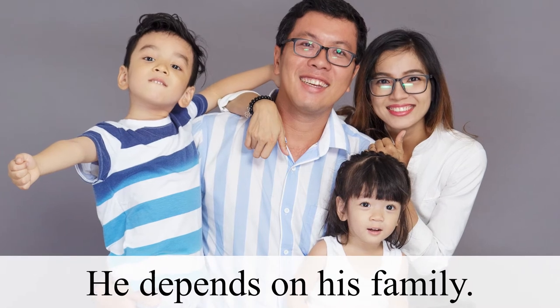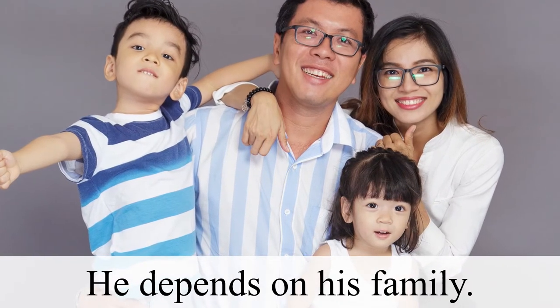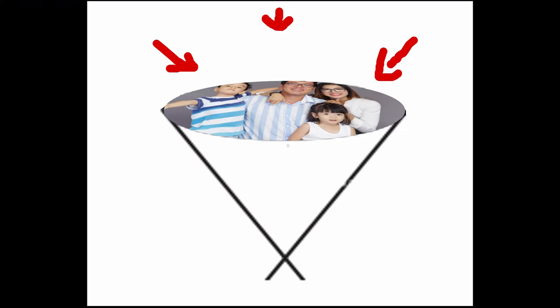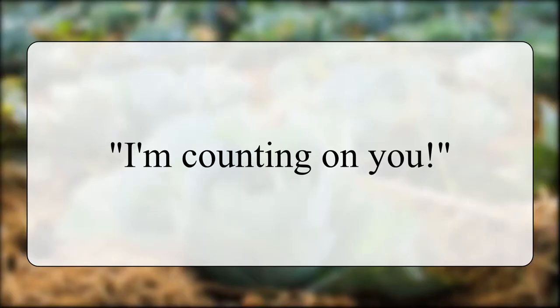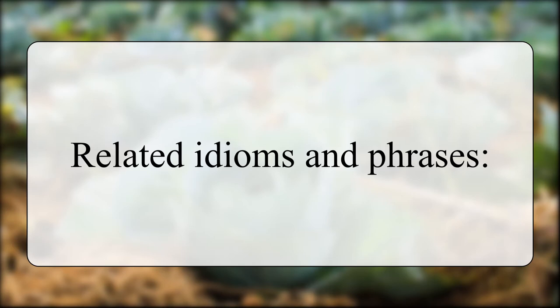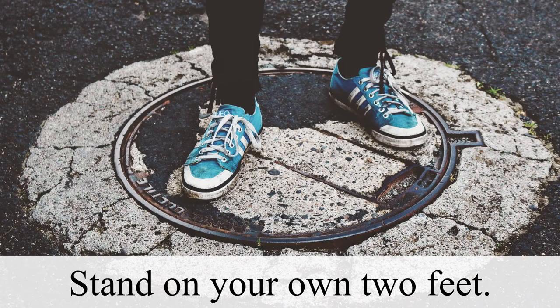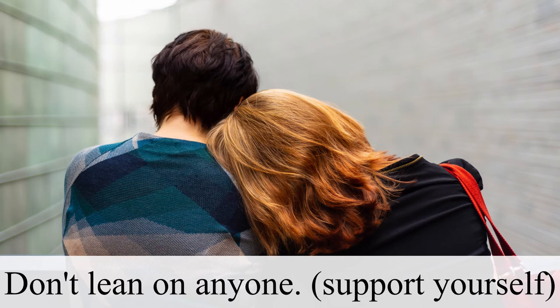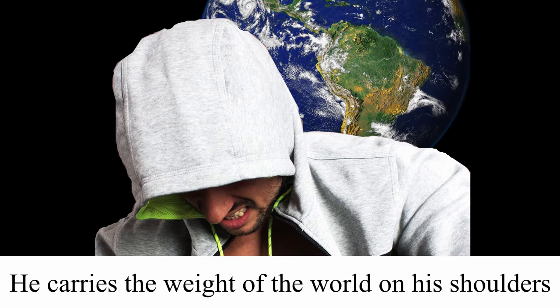This is very clear with depend on. For example, he depends on his family. Clearly, his family is his support, so he places his weight on them. The example sentence, I'm counting on you, means that I'm putting my weight on you because I'm trusting that you will do something for me. Now, notice something very interesting. We have idioms and phrases that make this point even stronger. Stand on your own two feet, meaning don't rely on anyone for help or support. We can express the same idea with the phrase, don't lean on anyone. And also, he carries the weight of the world on his shoulders.